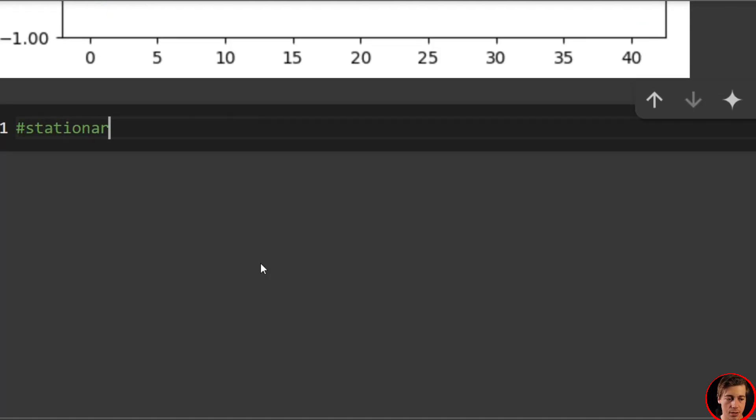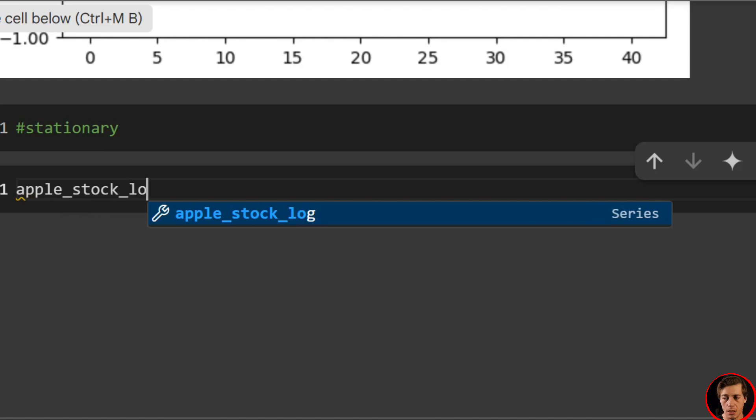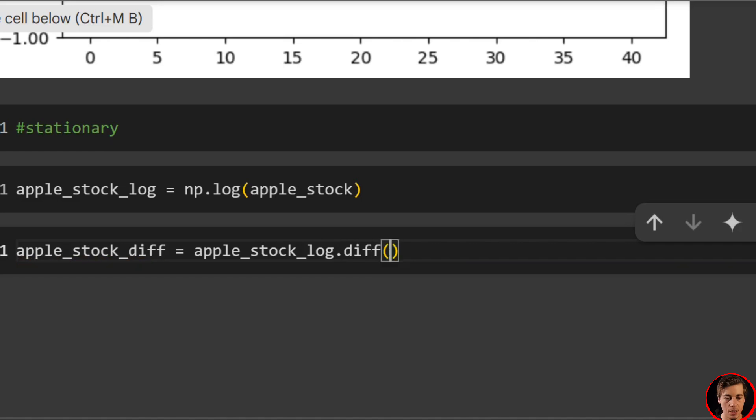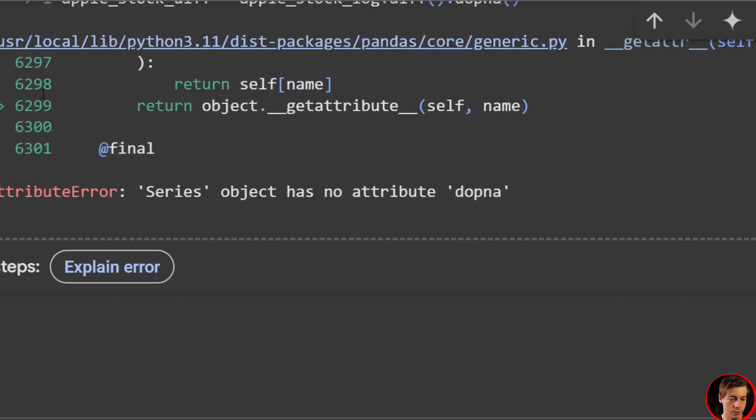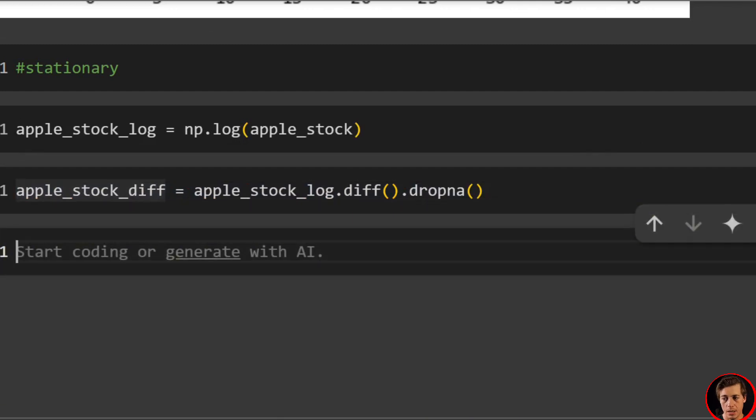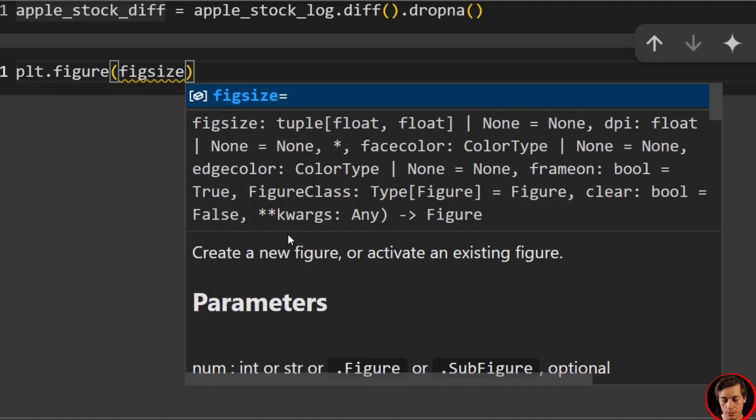What I want to do next is take a look at stationary data. I'm just going to do really quick log and difference. So apple_stock_log equals np.log, pass in apple_stock. And then what we'll do next is the difference. So apple_stock_diff equals apple_stock_log.diff, and we're also going to drop any NaN values so dropna. Great, so we have both of those over here. Now we have our different data which is stationary.